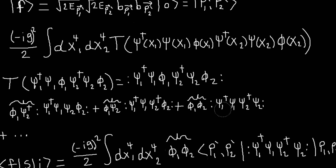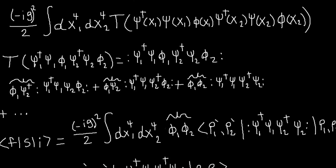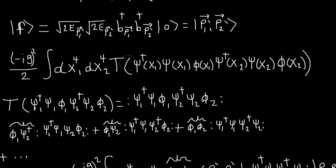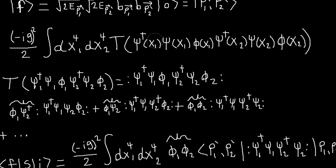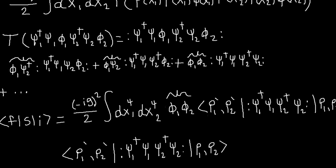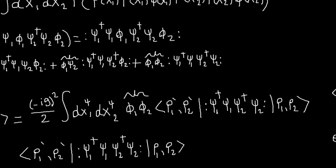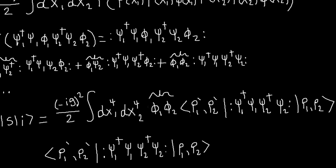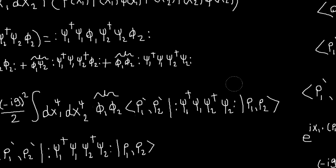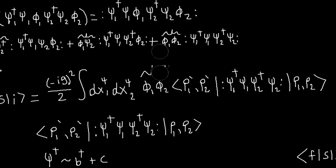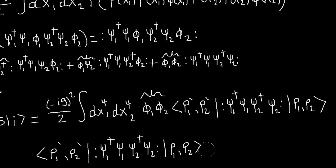So this is the term we're going to calculate. We can write out the expression by plugging in this interaction term and computing the amplitude — this matrix element. What we'll need to evaluate is this inner product. I think we'll work through how to actually evaluate this in the next video.